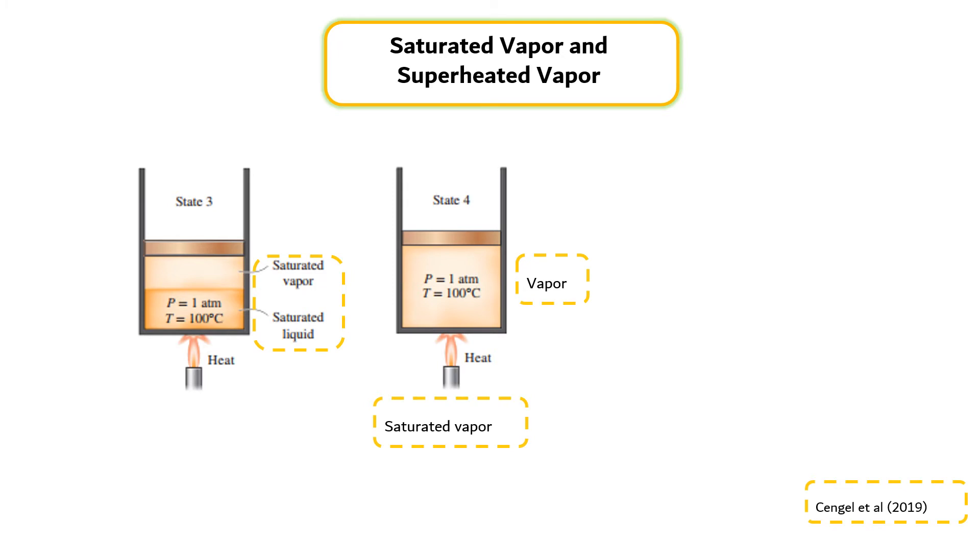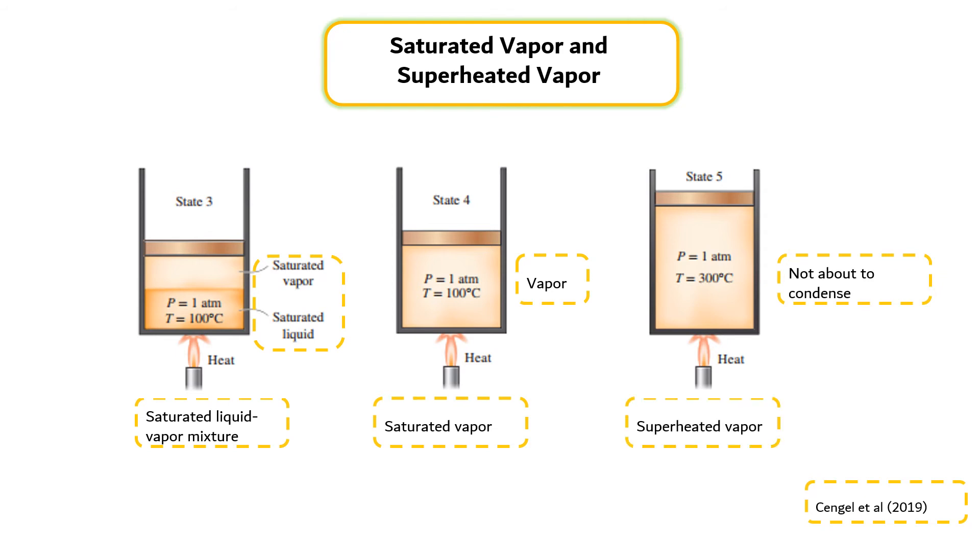A substance at states between 2 and 4 is referred to as a saturated liquid-vapor mixture since the liquid and vapor phases coexist in equilibrium at these states. Once the phase change process is completed, we are back to a single phase region again, and this time it is vapor. Further transfer of heat results in an increase in both the temperature and the specific volume as shown in the right figure. A vapor that is not about to condense is called a superheated vapor.